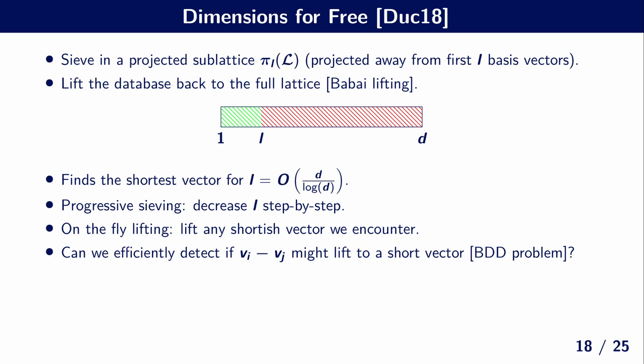So this means that we can have an extra problem: can we efficiently detect if any pair or vector within a bucket, if we take the difference of these, if this vector might lift to a short vector inside of the full context? And actually what this gives us is a BDD problem on this small context between 1 and L. So one way to solve this BDD problem is using Babai lifting, as mentioned before. However, this has a quadratic running time in the lifting dimension.